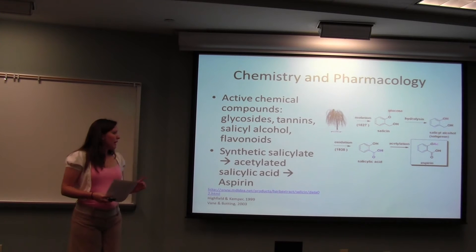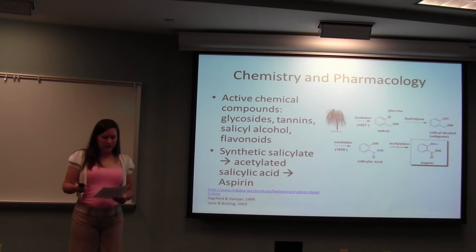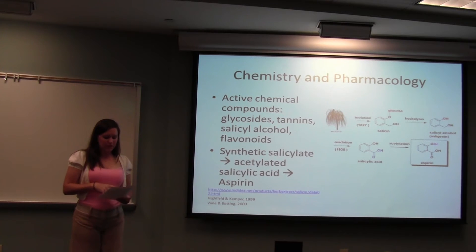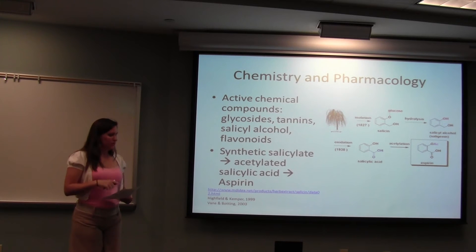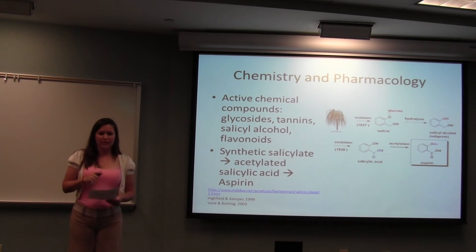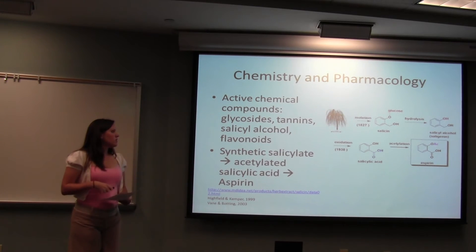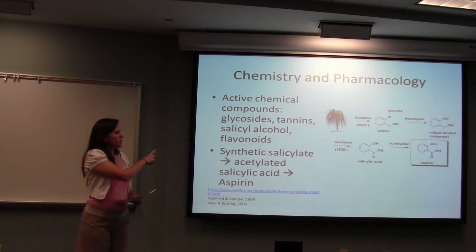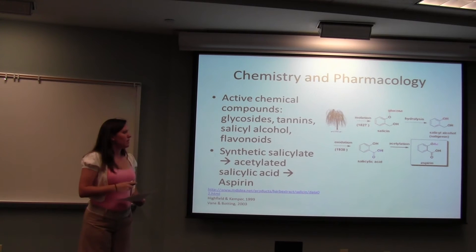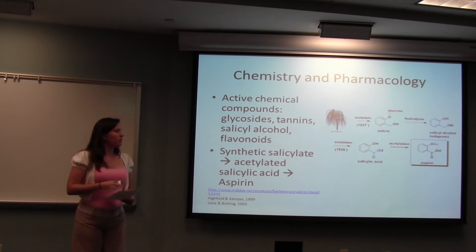The way aspirin works is it inhibits the COX enzyme. This enzyme leads to the creation of prostaglandins, which cause inflammation, swelling, pain, and fever. Here's a picture of how they isolated salicin and acetylated it to create aspirin.